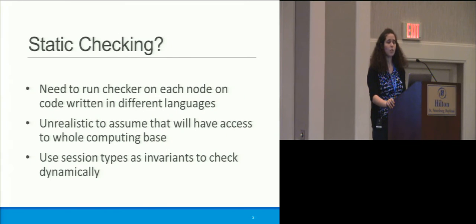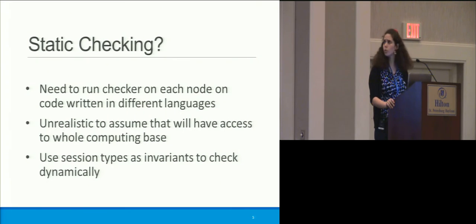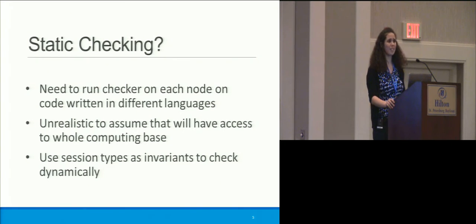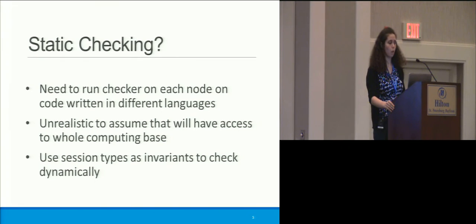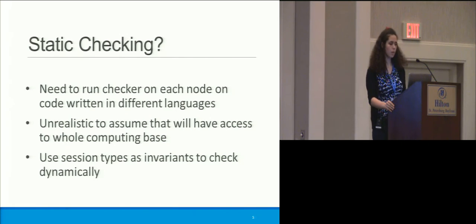We're going to use session types for dynamic checking. Why don't we do static checking? We don't really have any information about these systems, and we don't want to make assumptions about what languages they're written in. If we used static checking, I would need a static checker for each node — that would be a whole lot of static checkers. Also, it's unrealistic to assume we'll always have access to the whole computing base. In our approach, we use session types as invariants and then check them dynamically.